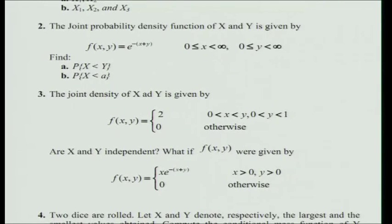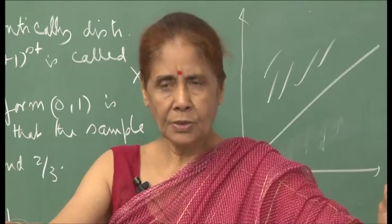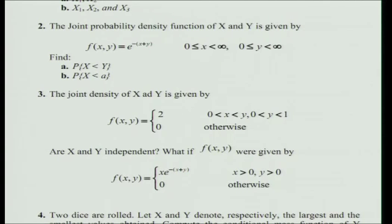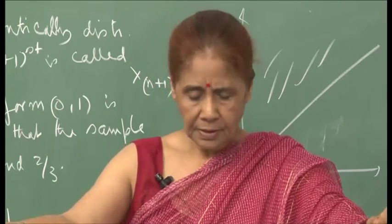Problem 3: you are given the joint density f(x,y) = 2 for 0 < x < y, 0 < y < 1, and 0 otherwise. Are X and Y independent? Since the limits of x are dependent on y, my immediate reaction is no, they are not independent — but you must find the marginals and show that the joint is not the product of the marginals. If the new joint function is f(x,y) = x × e^{-(x+y)}, the limits for x and y are independent of each other, so the joint PDF separates and they are independent.